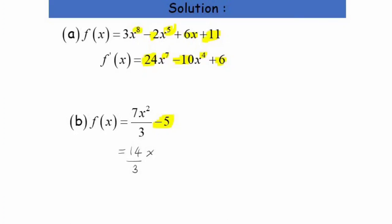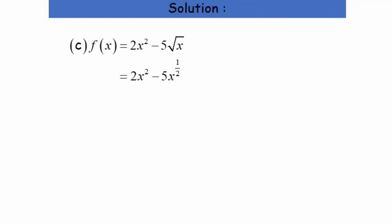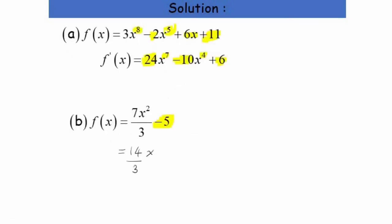For part c, differentiating 2x² − 5√x: we convert 5√x to 5x^(1/2). So f'(x) = 4x minus (5/2)x^(−1/2), which equals 4x − 5/(2√x). Also, going back to part b, I forgot to write f'(x) — so our f'(x) for part b is 14x/3.